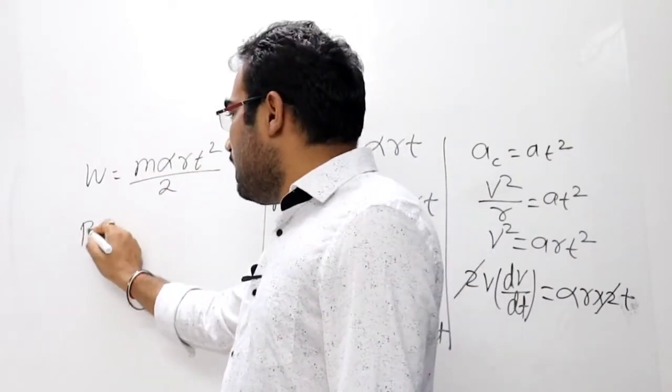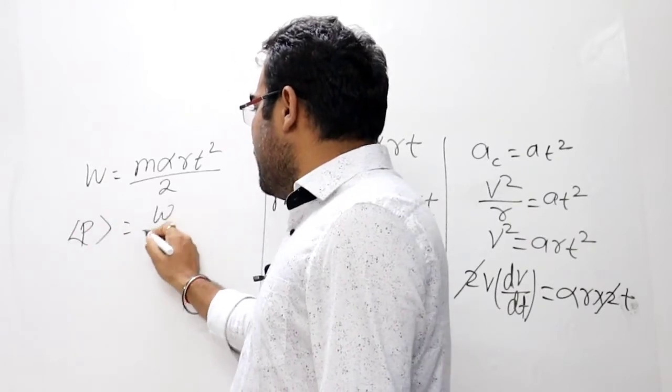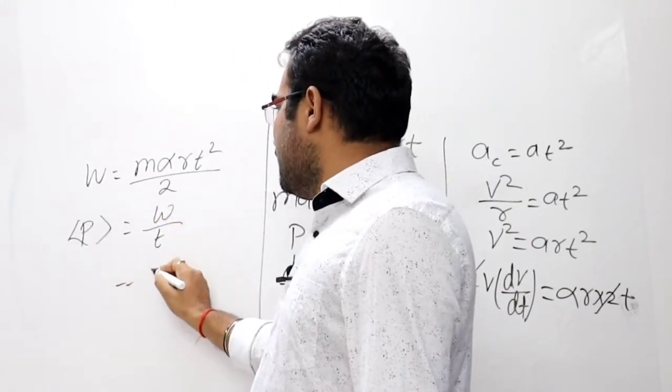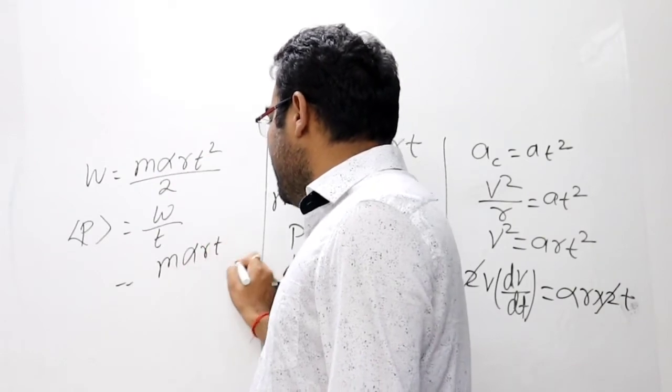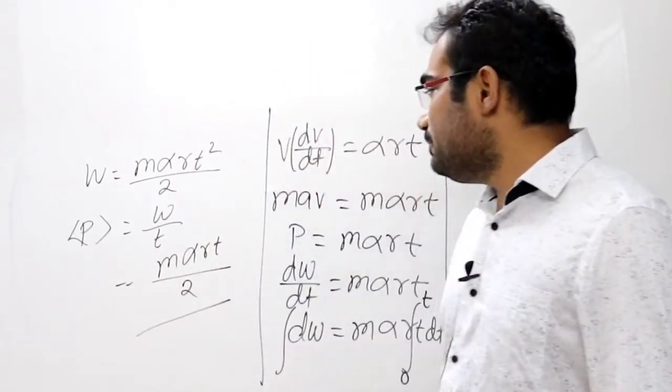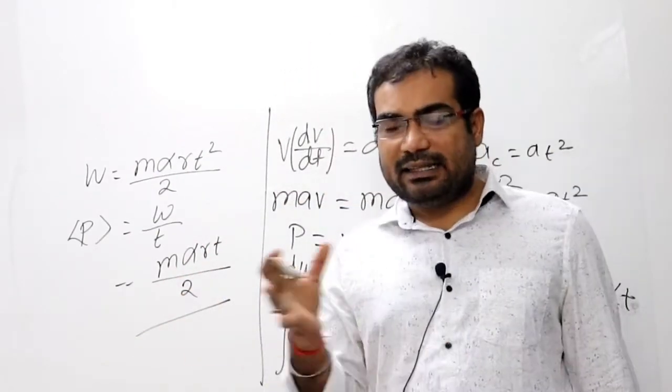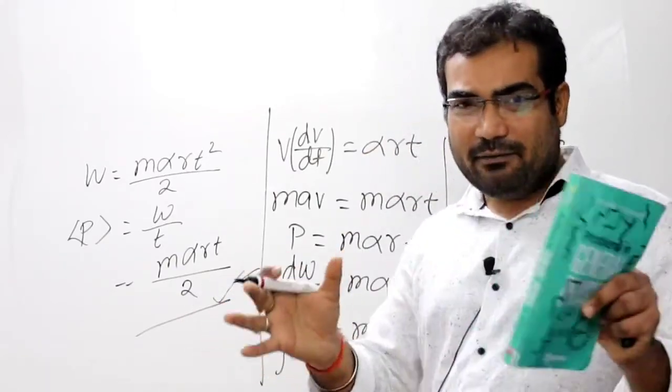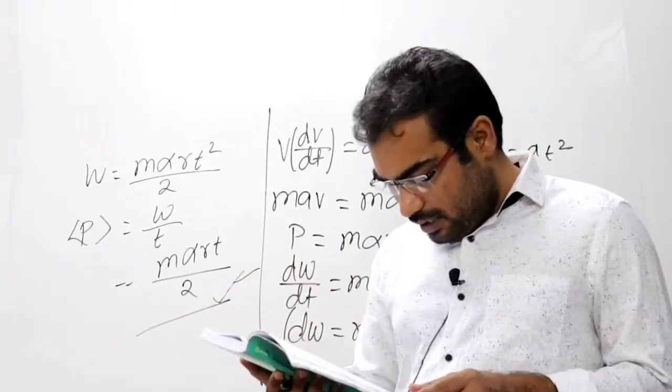Thik hai, toh average power kya hota hai - work done by time. Yehi hota hai na. Toh time se divide: M alpha R T squared by 2 divided by T. Toh yeh M alpha R T by 2. T seconds me average power. Thik hai.